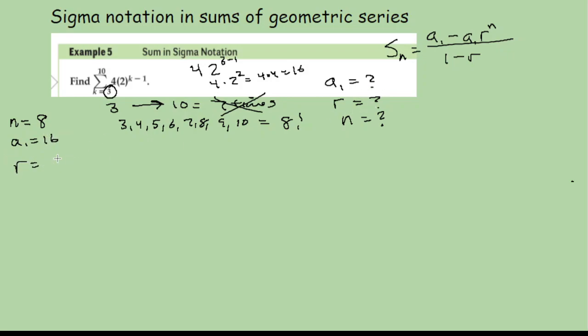And now my R, your R is just the thing that's having the exponent raised on it. So your R, in this case, is two. And so when I write this out now, it's going to be S of N is equal to 16 minus 16 times 2 to the eighth power all over 1 minus 2.